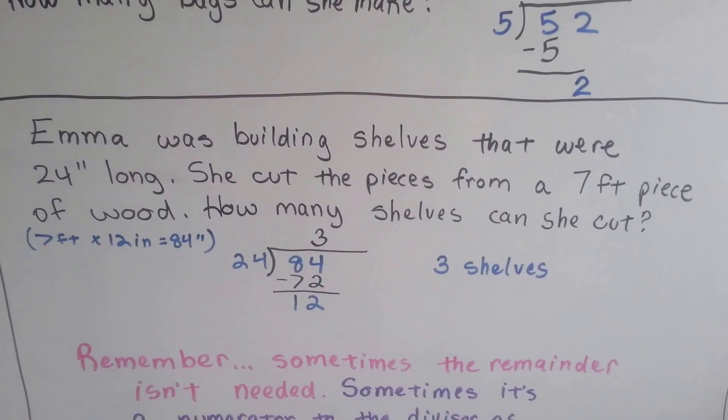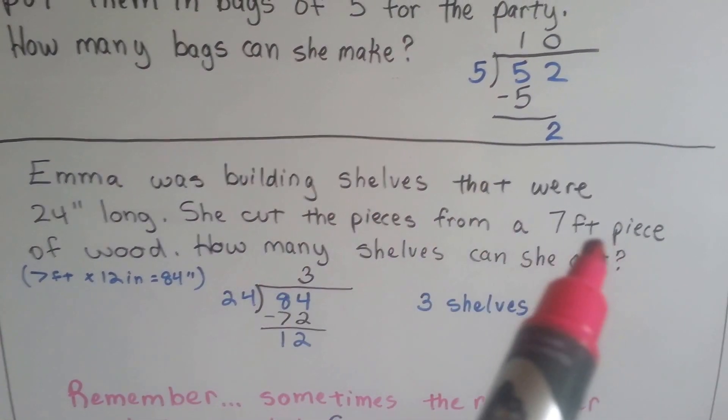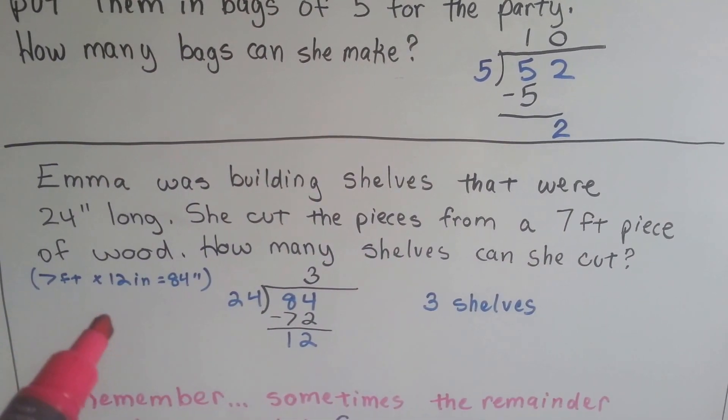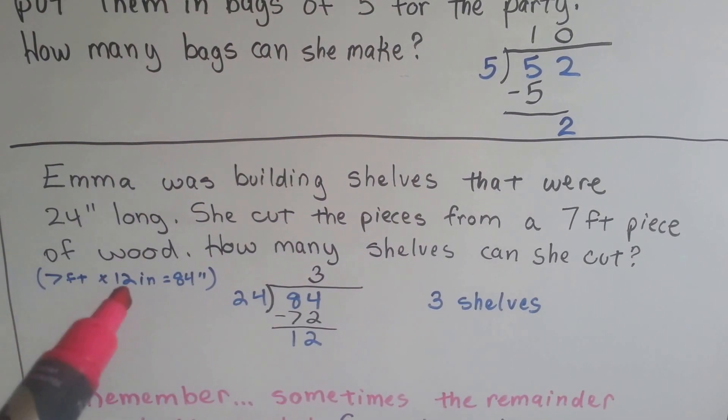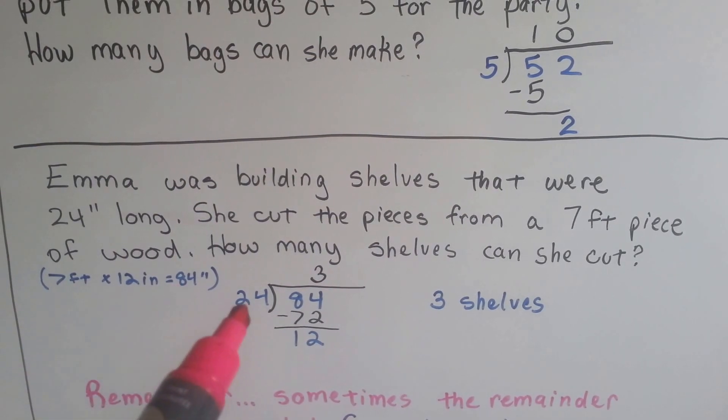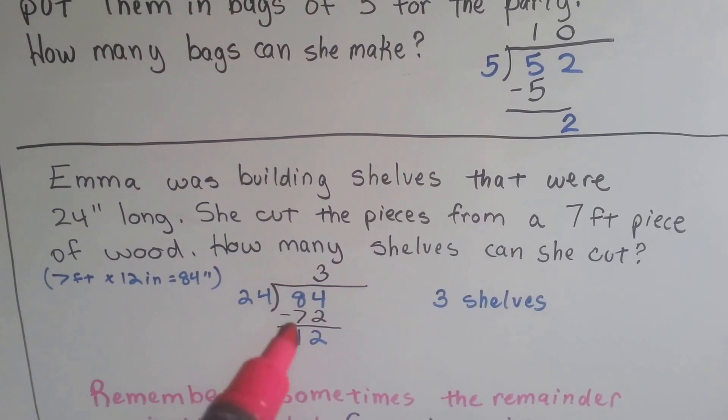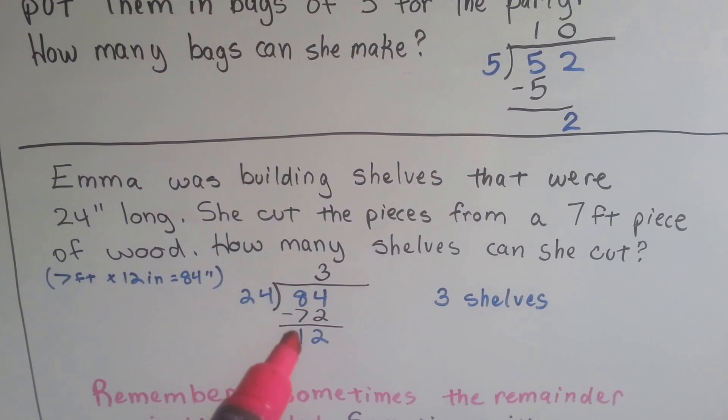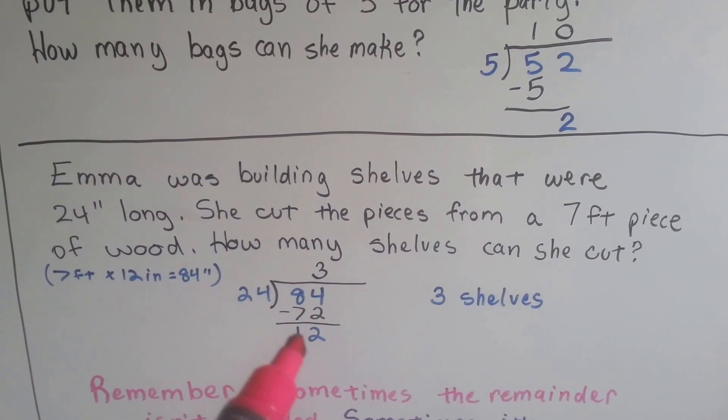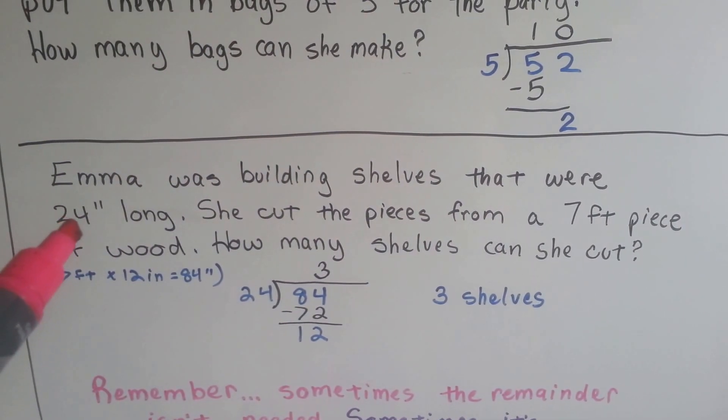How about now? Emma was building shelves that were 24 inches long. She cut the pieces from a seven-foot piece of wood. How many shelves can she cut from this seven-foot piece of wood? Remember, there's twelve inches in a foot. So seven times twelve would be eighty-four. Twenty-four goes into eighty-four three times. Twenty-four times three is seventy-two. That leaves twelve inches left over. She can't make a full shelf from that twelve inches. So that twelve inches is not important. What's important is how many twenty-four inch lengths she was able to get.